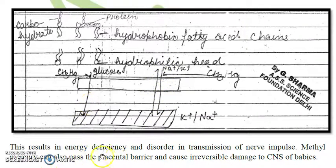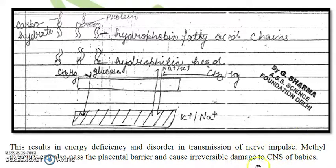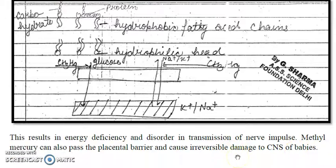This results in energy deficiency — a deficiency of sugar — and disorder in the transmission of nerve impulses. Methylmercury can also cross the placental barrier, meaning it is harmful to the fetus and causes irreversible damage to the central nervous system of babies.